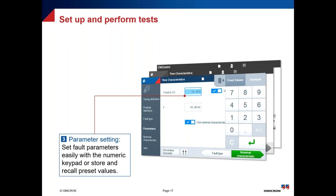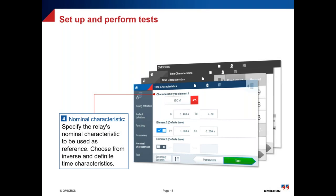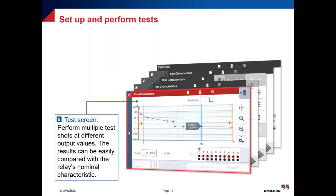Here is an example showing how to control the injection value — very easy and straightforward. As mentioned, we have a wheel for gradual increase and decrease, and a keypad to enter numbers directly. The display shows the nominal characteristic. We have up to three stages for overcurrent — for example, inverse or very inverse characteristic — with pickup value, time multiplier, and stages two and three as backup. If you enable all three stages, you get one report covering all three at the same time. You can export the result to a test report and print it later.